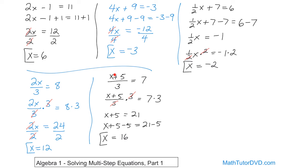And if you take this and you stick the 16 in here, what's 16 plus 5 is 21, right? 21 divided by 3 gives you 7, so you've gotten the correct answer.